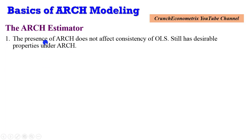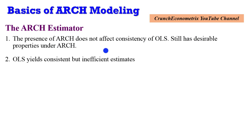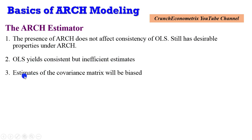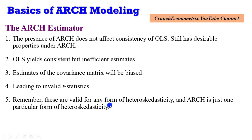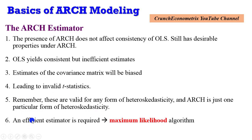The ARCH estimator: the presence of ARCH does not affect the consistency of OLS. OLS still has desirable properties under the ARCH model — OLS yields consistent but inefficient estimates. If you use OLS to estimate an ARCH model, the estimates of the covariance matrix will be biased and it will yield invalid T-statistics. Remember, these are valid for any form of heteroskedasticity, and ARCH is just one particular form of heteroskedasticity. Therefore, the most ideal and efficient estimator to use will be the maximum likelihood algorithm, or maximum likelihood estimator.